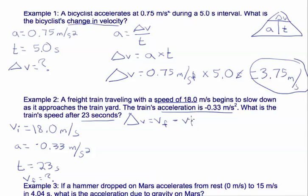Let's do a few more examples. So example 3 says, if a hammer dropped on Mars accelerates from rest to 15 meters per second in 4.04 seconds, what is the acceleration due to gravity on Mars? So from rest, and that's where it starts. So the initial equals 0 meters per second. And the final equals 15 meters per second. And we have 4.04 seconds. And we want to know the acceleration.